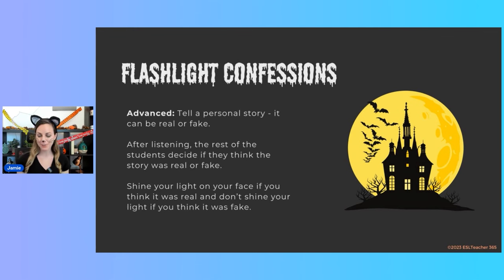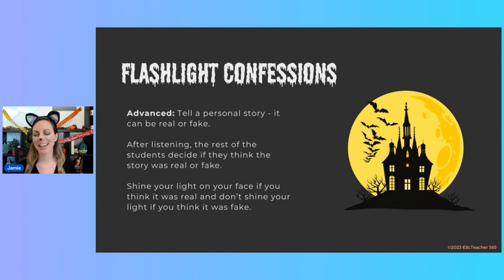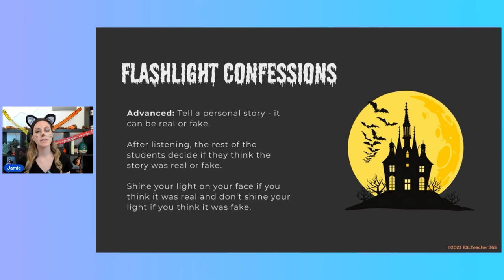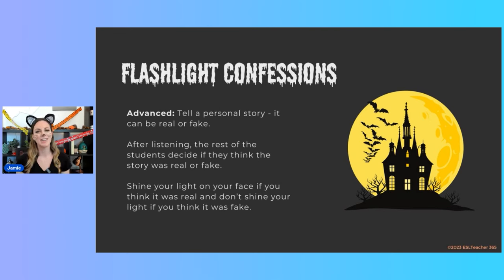For the advanced version of Flashlight Confessions, your students tell a story that's either real or fake. At the end, all the other students vote — if they think the story was real they shine their light; if they think it was fake they don't. You can give students a few minutes to think of their stories and write down some quick notes, or do it as a fluency activity where they go off the cuff. You can also have them write down their story and read it out loud.